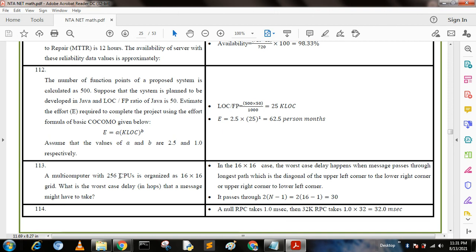Next question: A multi-computer with 256 CPUs is organized as a 16 by 16 grid. What is the worst case delay that a message might have to take? In a 16 by 16 case, the worst case delay happens when the message passes through the longest path, which is the diagonal from the upper left corner to the lower right corner or upper right corner to the lower left corner. It passes through 2 times (n minus 1), that is 2 times (16 minus 1) equals 30. This is the required answer.